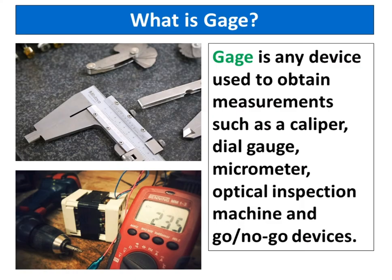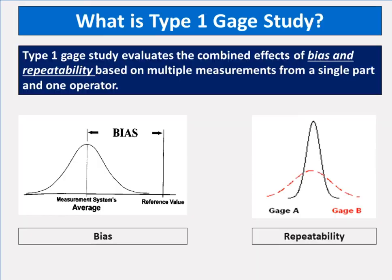What is a gauge? A gauge is any device used to obtain measurements, such as a caliper, dial gauge, micrometer, optical inspection machine, and go/no-go devices. What is a type 1 gauge study?